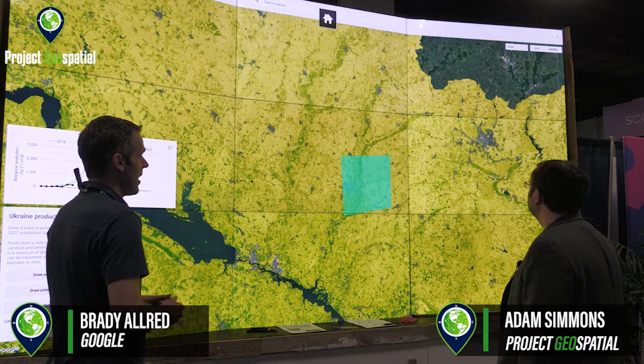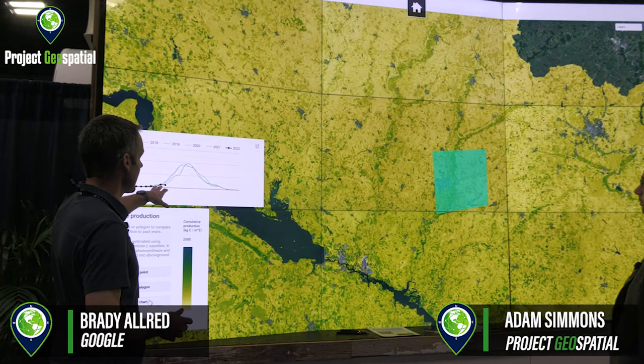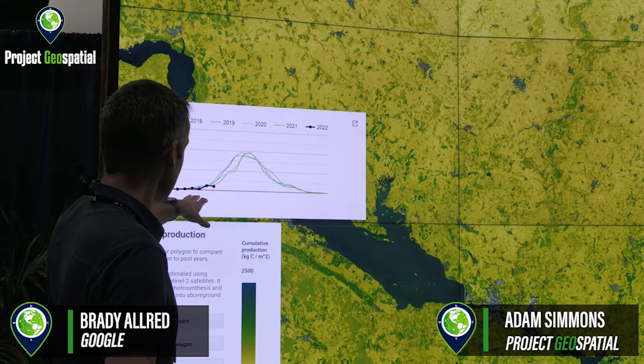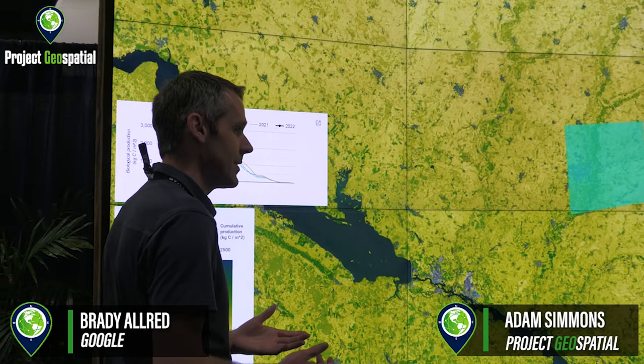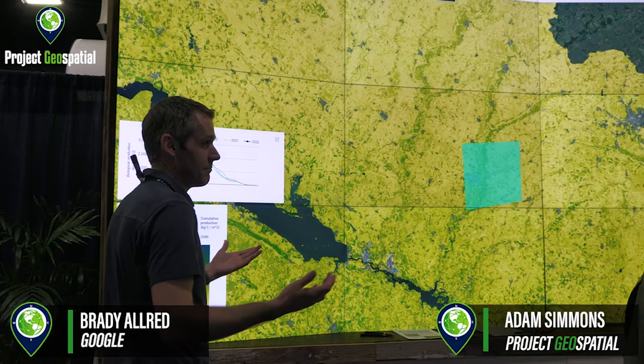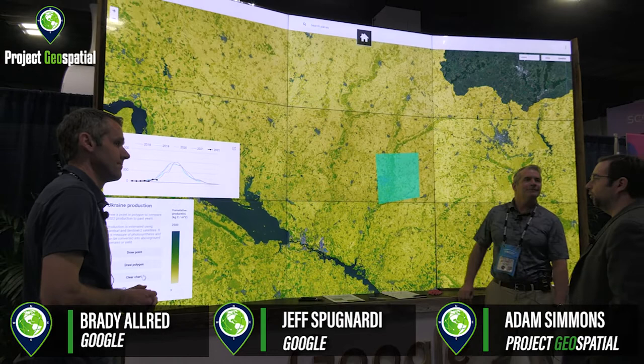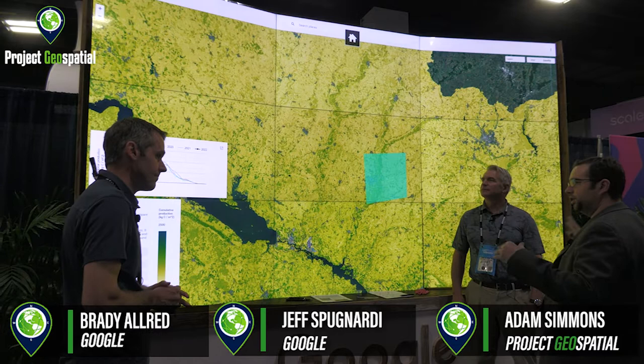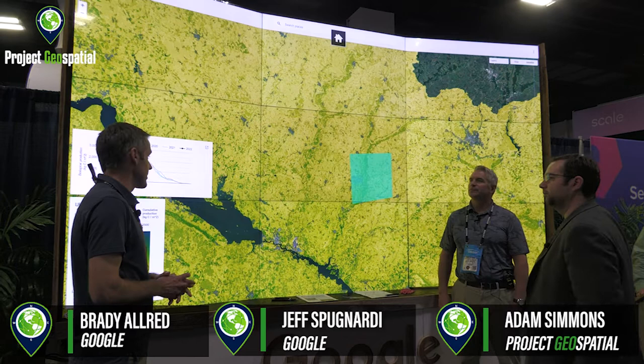In this particular case, we're looking at production across this polygon that was drawn and we're monitoring it in real time. The black line is showing production in 2022, and we're comparing it to the growing seasons of the last four years. We can track this throughout the growing season and say: is crop production on par with last year or the year prior? That information can be used for further analysis. So what's the output of this? Where can people take these products after they've visualized and done the analysis in Earth Engine?